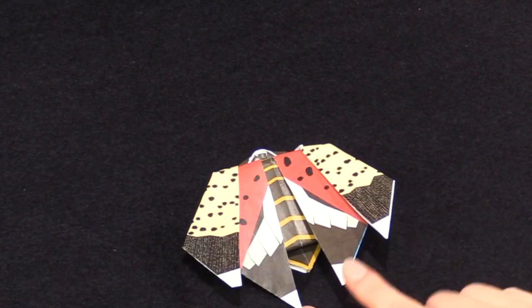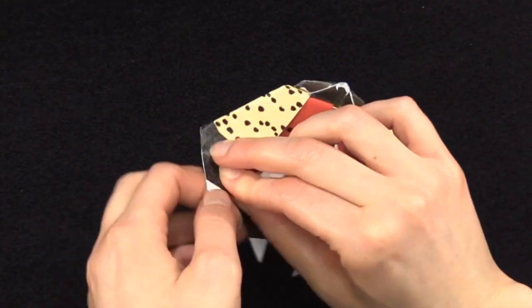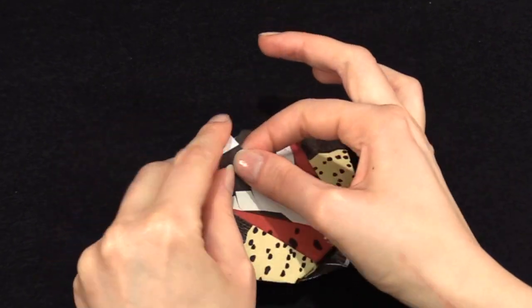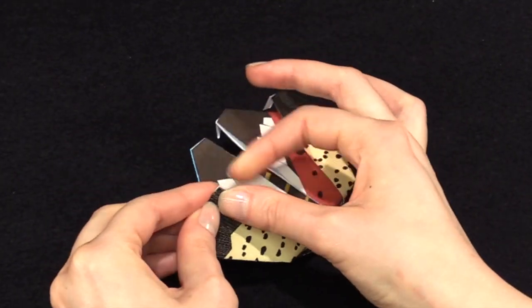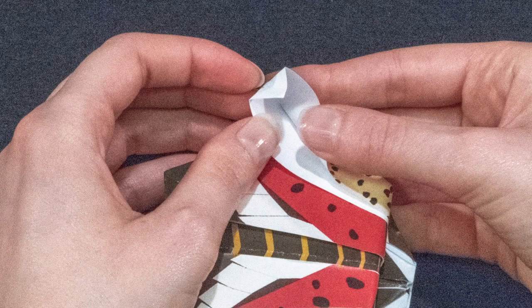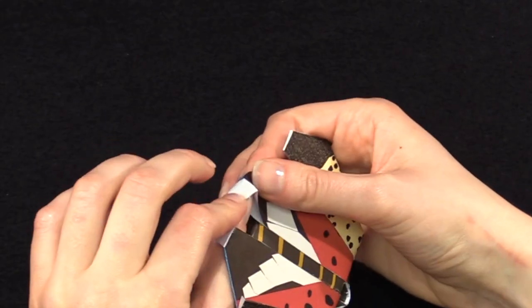Flip over, fold where the brown tips of the wings meet the white. Open the wings slightly and flip the white part of the wing tips inside.